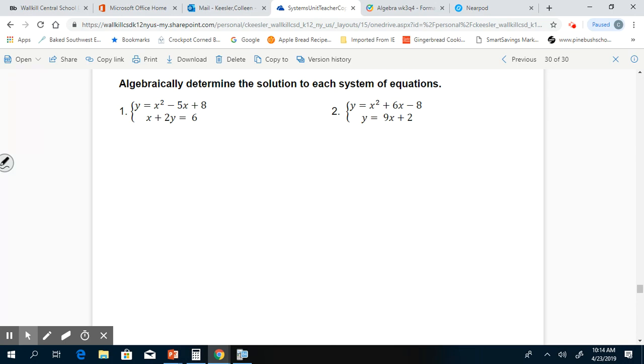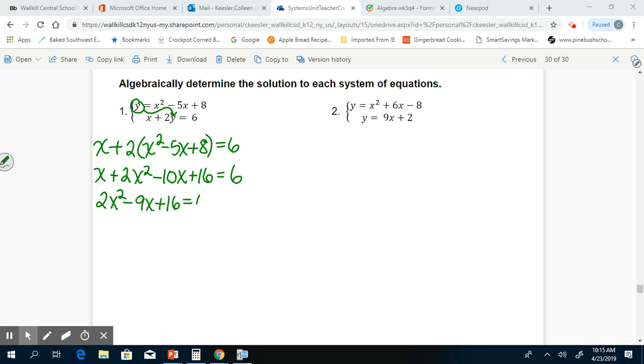For number 1, using substitution, I know that y can be replaced with this y here. So I'm going to write x plus 2 times x squared minus 5x plus 8 equals 6. Now I go ahead and distribute the 2: x plus 2x squared minus 10x plus 16 equals 6. Now I'm going to combine like terms. So 2x squared, x minus 10x is negative 9x plus 16 equals 6. And now I'm going to set it equal to 0. So 2x squared minus 9x, if I subtract 6, I get plus 10 equals 0.